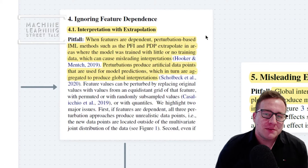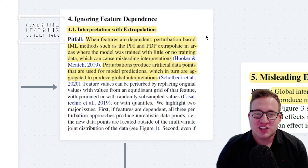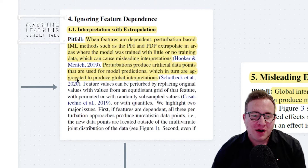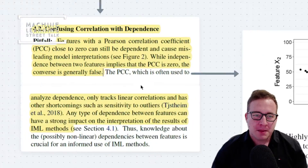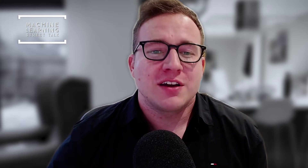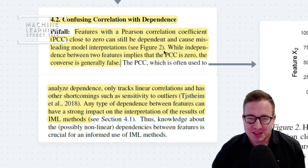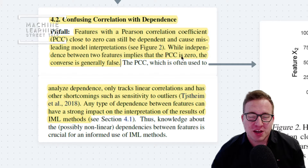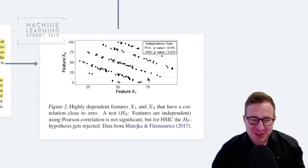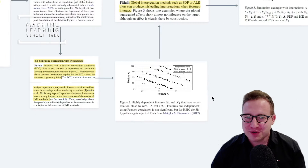He also points out that ignoring feature dependence is super important, and this is a problem that many IML methods have. He gives the example of partial dependency plots where they extrapolate in areas where the model has little training data, which can cause misleading interpretations. These perturbations produce artificial data points that are used for model predictions, which in turn are aggregated to produce global interpretation. Another pitfall is confusing correlation with dependence — features with a Pearson correlation coefficient close to zero can still be dependent and cause misleading model interpretations. While independence between two features implies the Pearson correlation is zero, the converse is generally false.